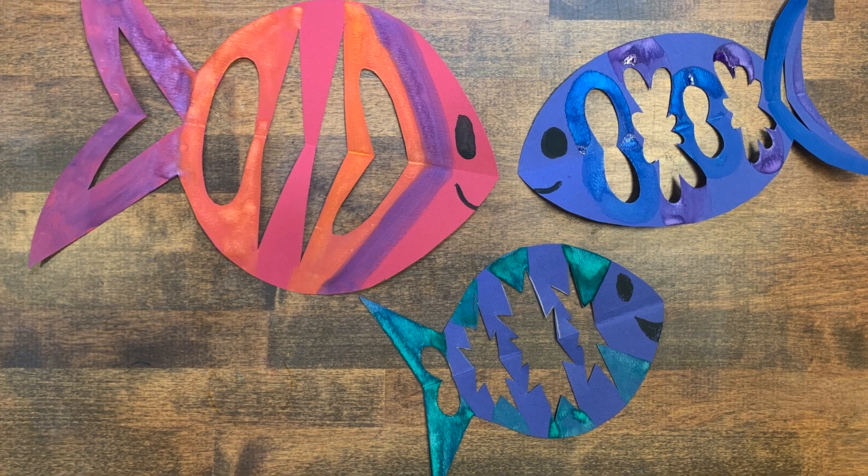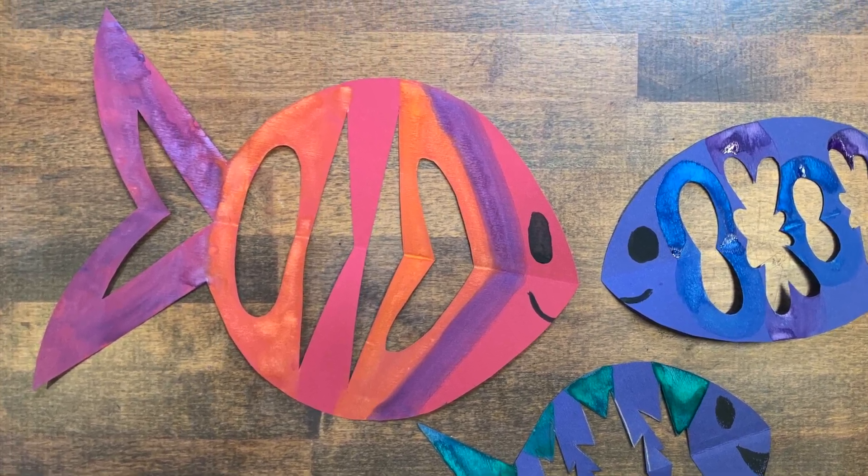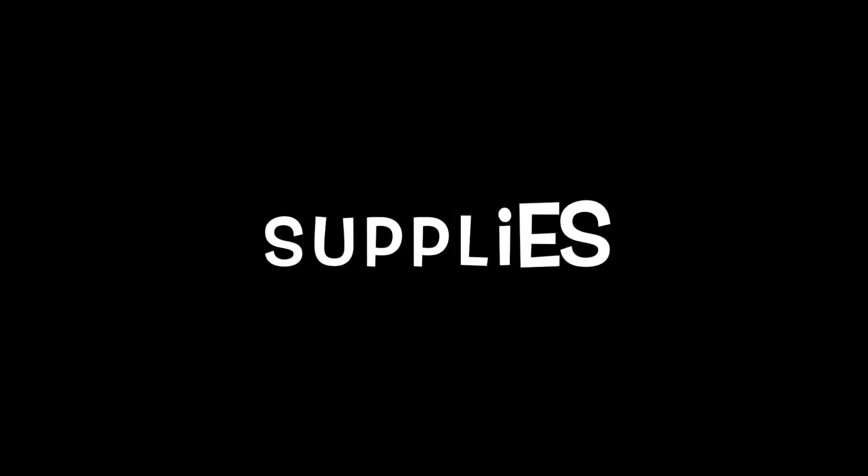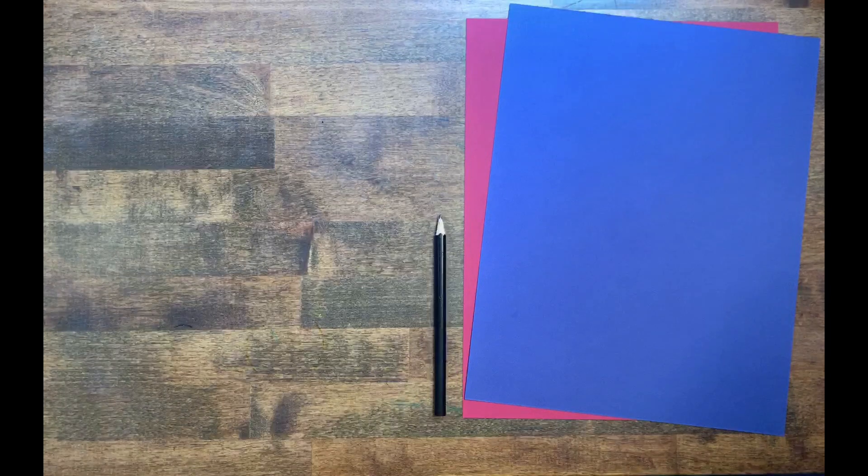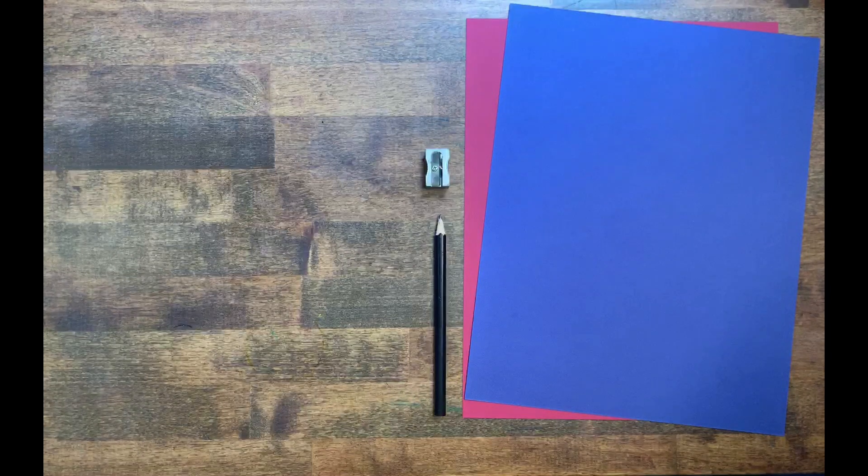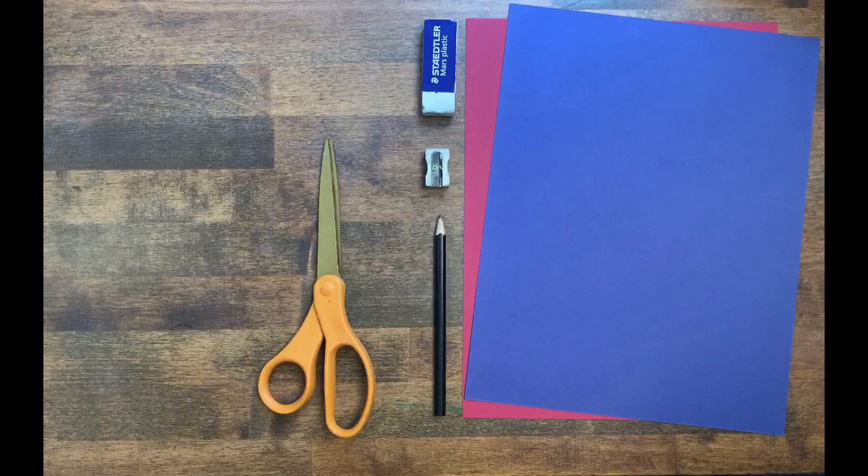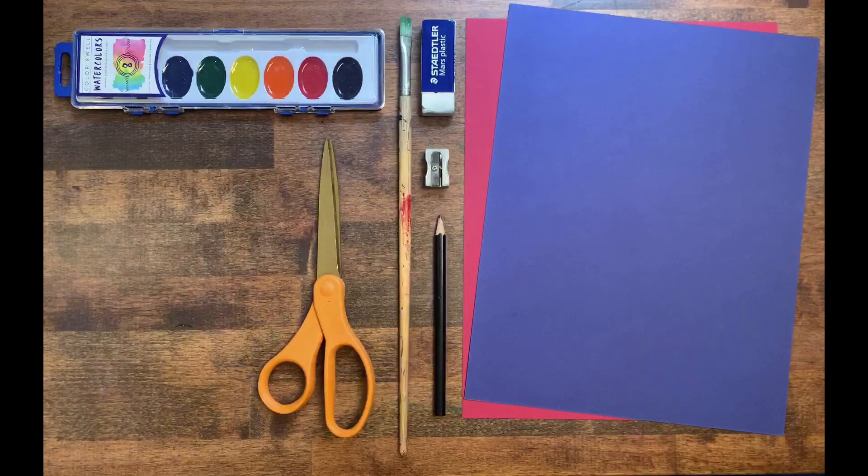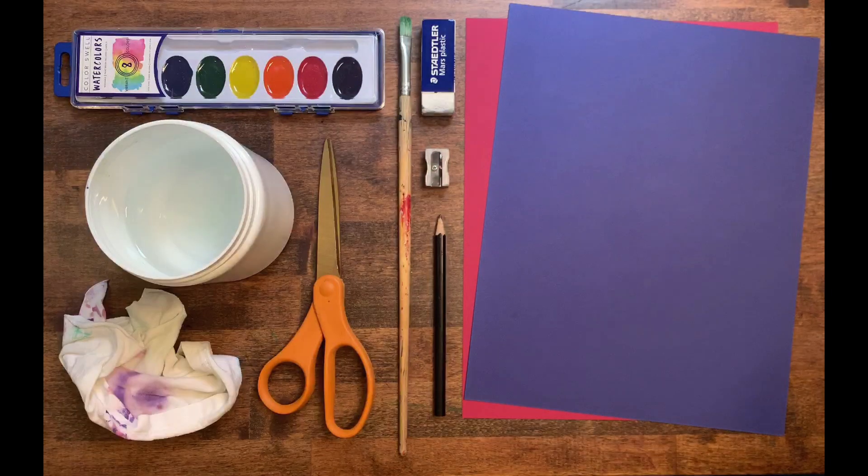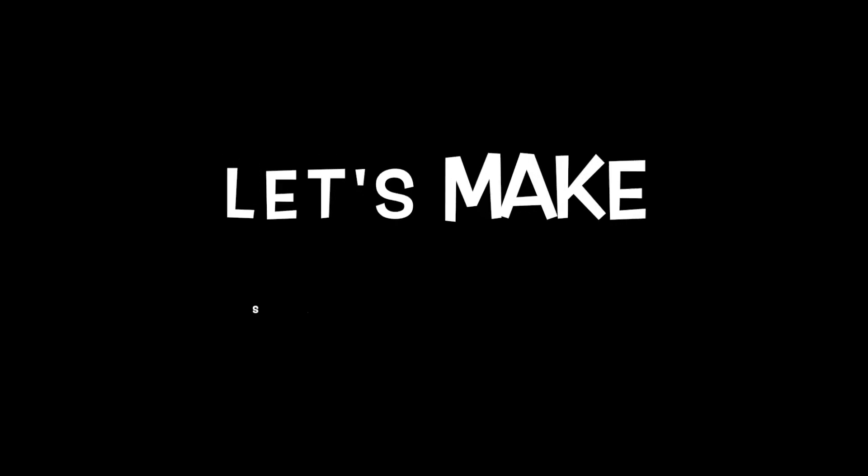For our art making today, we're going to make these really cool symmetrical cut-out fish. You'll need the following supplies: a couple pieces of plain white paper or construction paper, a pencil, a pencil sharpener, an eraser, a pair of scissors, paint, a paintbrush, a cup of water, and a rag or a paper towel. Do you have all your supplies? Let's get started.